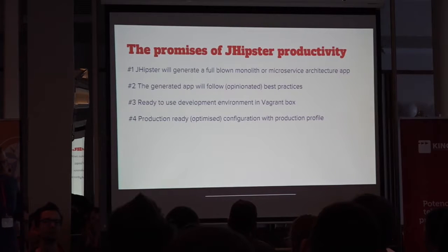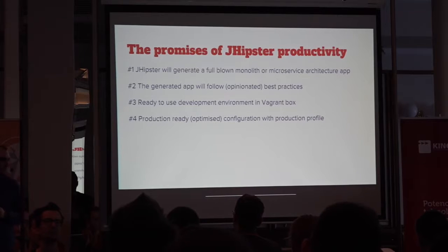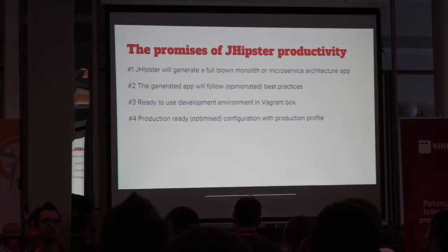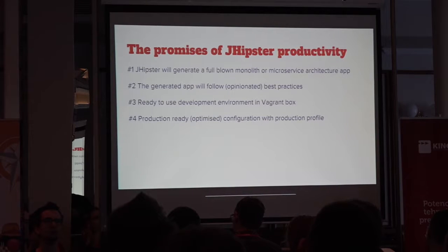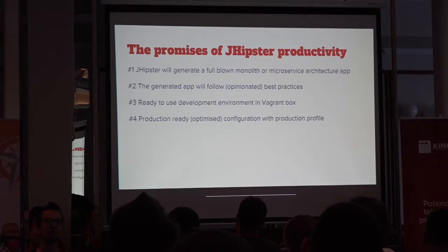The generated code will try to use best practices — however opinionated they are. JHipster also uses the GitHub issue tracker to discuss what those best practices are. In one issue, Oliver Gierke from Spring suggested for the JHipster team to use package-by-feature instead of their conventional package-by-layer. But the JHipster team decided that his arguments were not good enough and they stuck to packaging by layer.